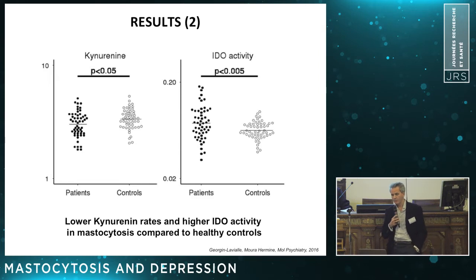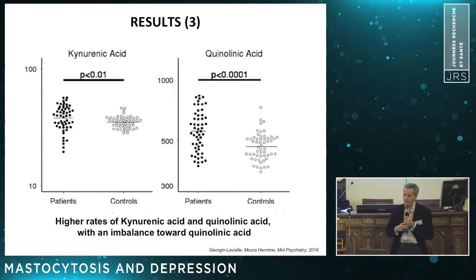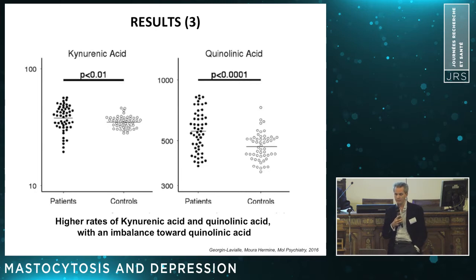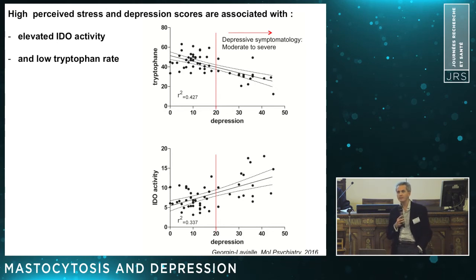We found increased kynurenine levels, and as a result, when determining IDO activity using kynurenine and tryptophan levels, an increased IDO activity. We also found accumulation of kynurenic acid and quinolinic acid, and — as in other inflammation-related conditions of depression — an imbalance toward quinolinic acid. We also found a correlation between this increased IDO activity and depressive scores.